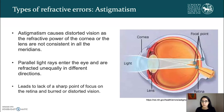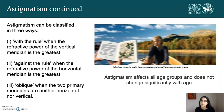Astigmatism causes distorted vision as the refractive power of the cornea or lens is not consistent in all meridians, so parallel light rays enter the eye and are refracted unequally in different directions, leading to a lack of a sharp point of focus on the retina. Astigmatism can be classified three ways: with the rule, when the refractive power of the vertical meridian is greatest; against the rule, when the horizontal meridian is greatest; and oblique, when the two primary meridians are neither horizontal nor vertical. Astigmatism can affect all age groups and doesn't significantly change with age.